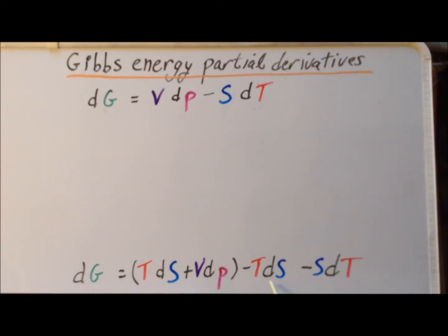We notice that the first and third terms are additive inverses of each other, so therefore they will drop out, and we get our expression for dG that it's equal to VdP minus SdT.